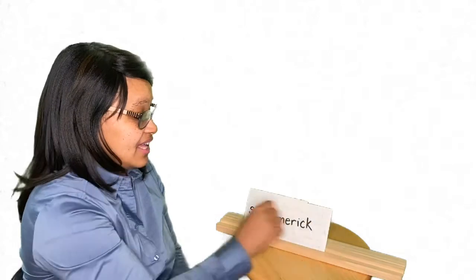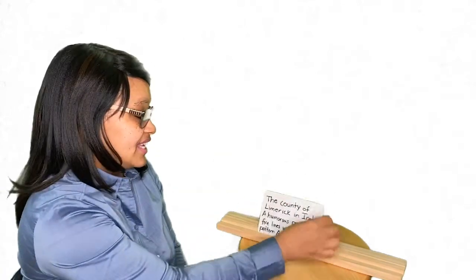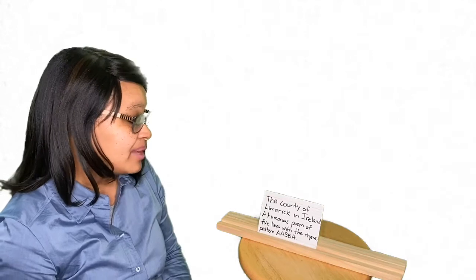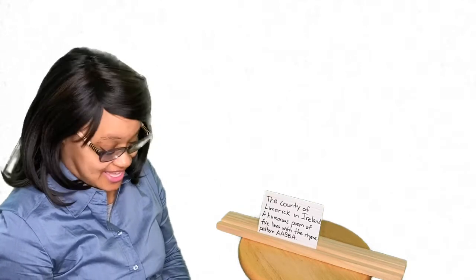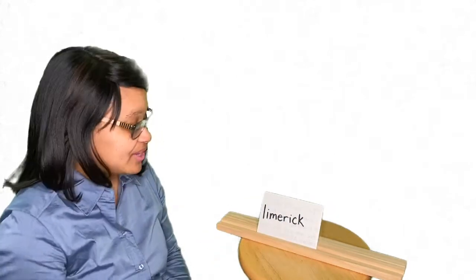Now we have a limerick. And a limerick is the county of limerick in Ireland. It's a humorous poem of five lines with the rhyme pattern A, A, B, B, A. And that's where we get limerick. It's named after a place.